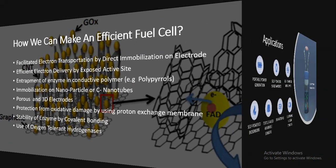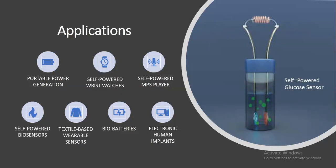Applications of enzymatic biofuel cells include portable power generation, self-powered wristwatches, and self-powered MP3 players. They can also be used as self-powered biosensors, textile-based wearable sensors, biobatteries, and electronic human implants.